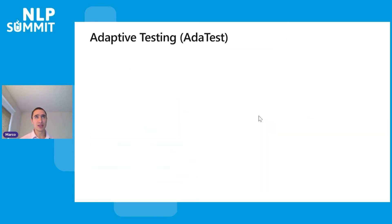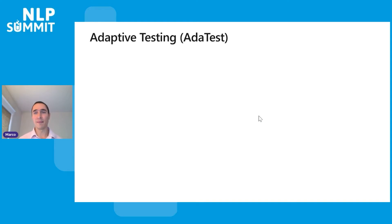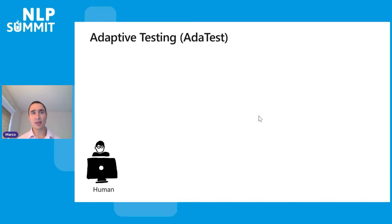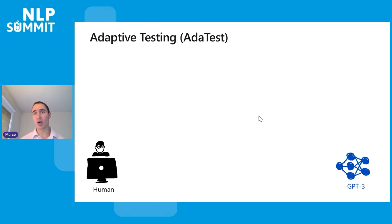Our response to this is what we call Adaptive Testing, or AdaTest. There are two ingredients: one is a human, and two is a large language model. In this work we're using GPT-3, but it doesn't matter — whatever large language model should work.